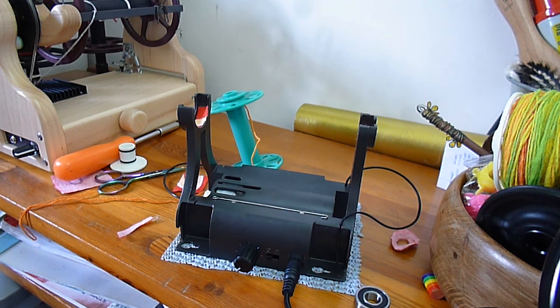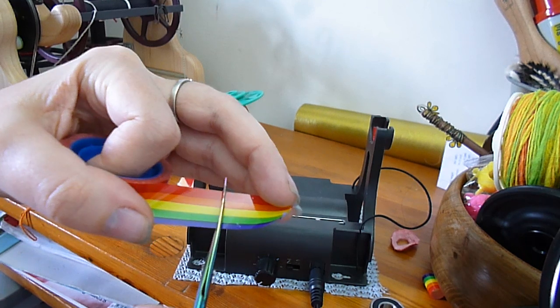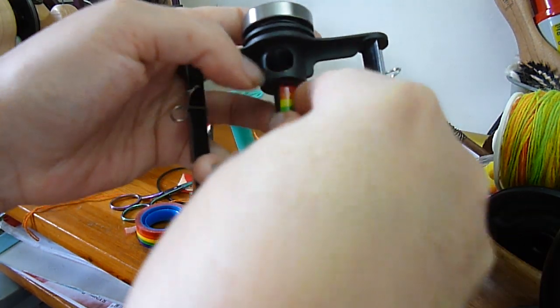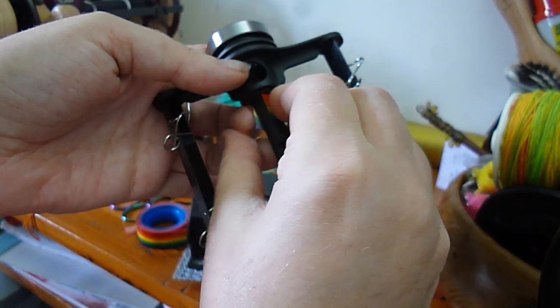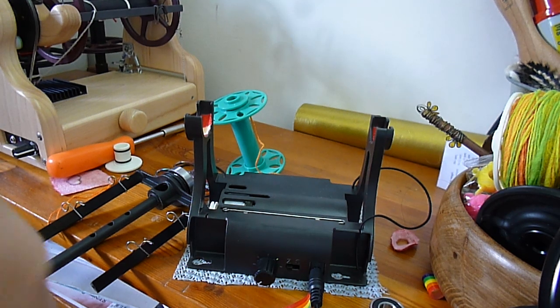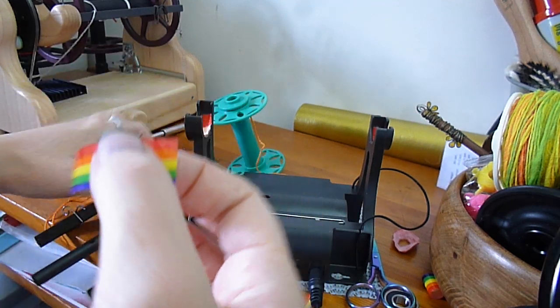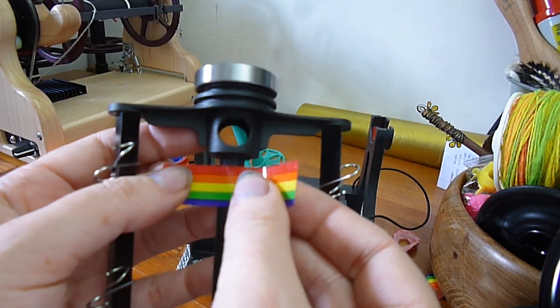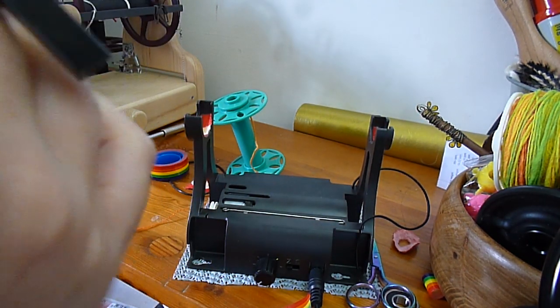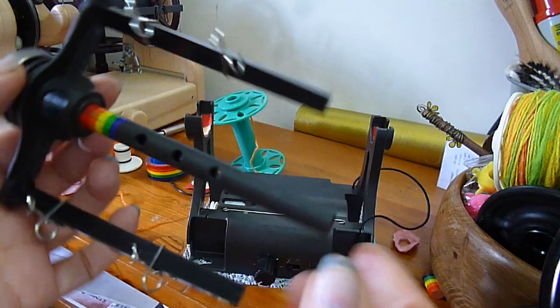This bit's going to be a bit boring while I find the end of the tape. There we go. So, I'll cut a bit about that big. It doesn't really matter as long as it's enough to go all the way around the shaft. Put it on right at the end. And wrap it around. That's not big enough to go all the way around the shaft, so I'll do another bigger bit. Let's try about that much this time. Line it up right at the top and wrap it around.